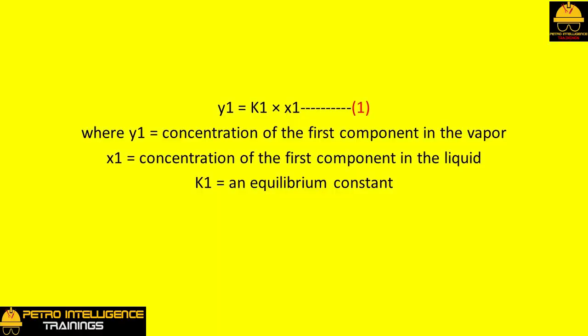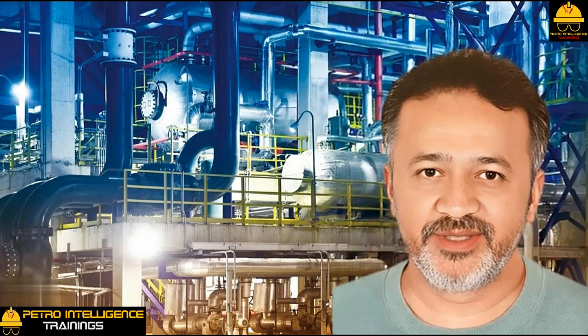y1 equals K1 times x1, where y1 equals concentration of the first component in the vapor, x1 equals concentration of the first component in the liquid, K1 equals an equilibrium constant. We really should use mole fraction and not concentration in our description of y and x.